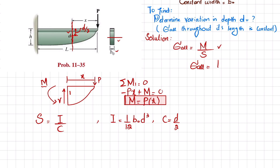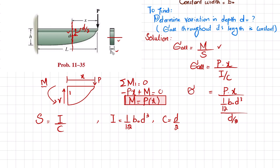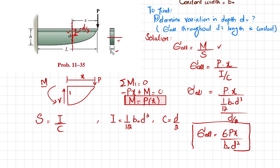Now we can put it in the formula. Allowable bending stress equals moment P times x divided by section modulus I over c. So that is P times x divided by (1/12 times b naught times d cubed) divided by (d over 2). When you simplify, you get allowable bending stress equal to 6Px divided by b naught times d squared.